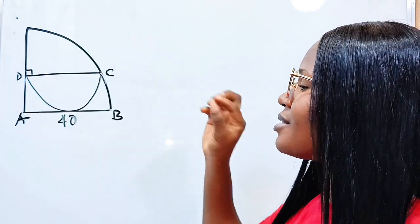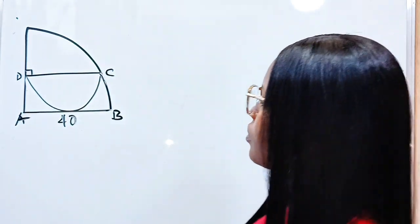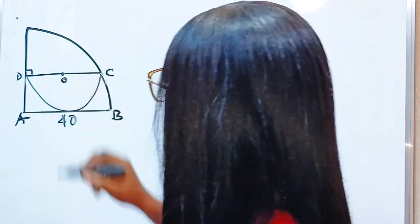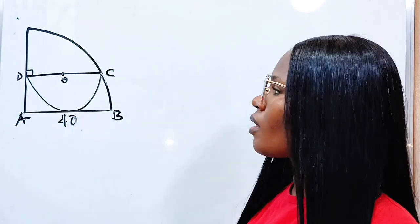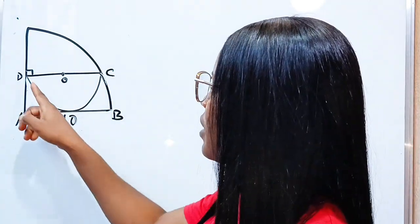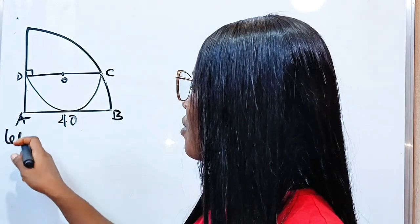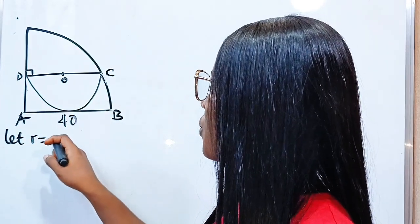DC is the diameter of the smaller semicircle. Let's call this point O, the center of DC, so it means that for the smaller semicircle, let r be equal to the radius of the semicircle.